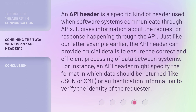An API header is a specific kind of header used when software systems communicate through APIs. It gives information about the request or response happening through the API. Just like our letter example earlier, the API header can provide crucial details to ensure the correct and efficient processing of data between systems. For instance, an API header might specify the format in which data should be returned, like JSON or XML, or authentication information to verify the identity of the requester.